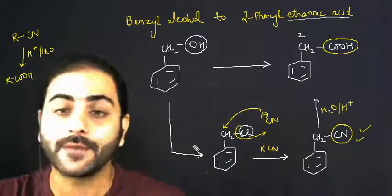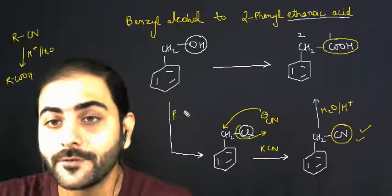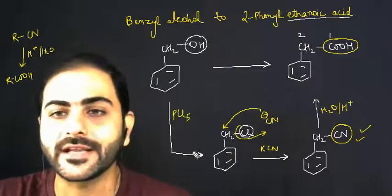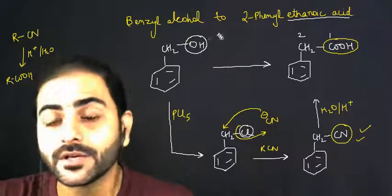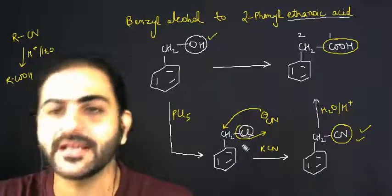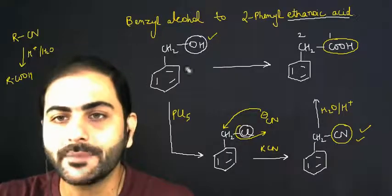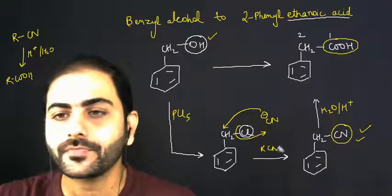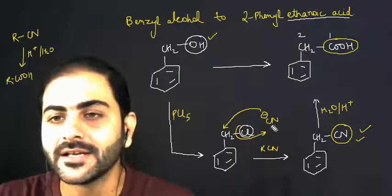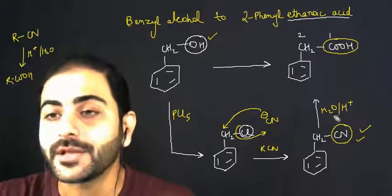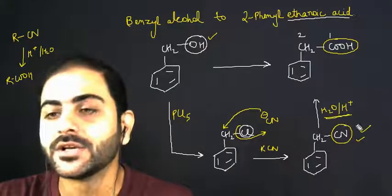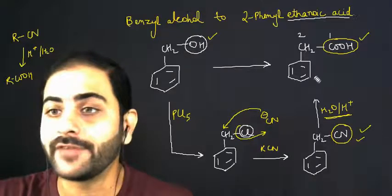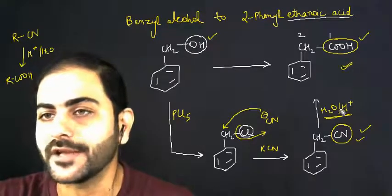So now the good news is that this is very easy to do. I have told you in the previous videos, PCL5 is a good chlorinating agent. What is chlorinating agent? It replaces OH to Cl. So if I have benzyl alcohol in PCL5, then OH is replaced by Cl. Then with cyanide, cyanide has replaced chlorine. Then I have water and H+, then cyanide has become COOH. So now these three steps have helped us in achieving the final product.